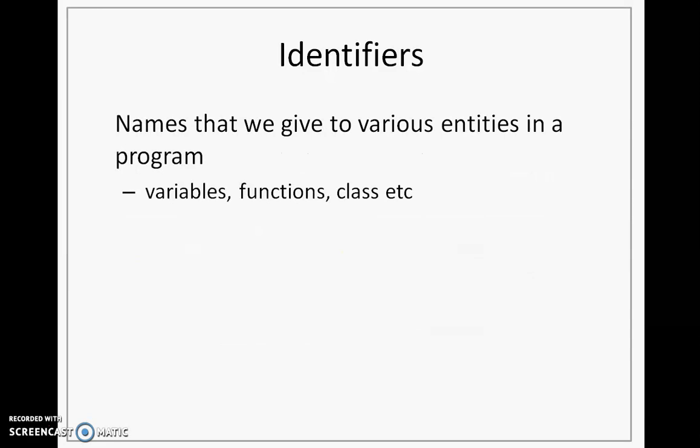Next we look at what identifiers are. Many times, as a programmer, I will have to give names to various entities in a program. For example, I would be giving names to variables, functions, classes, and so on. Such names we call as identifiers. These are names that we give, so they do not have a specific fixed set of words that I have to pick up from. There are rules that we use for forming the identifiers.